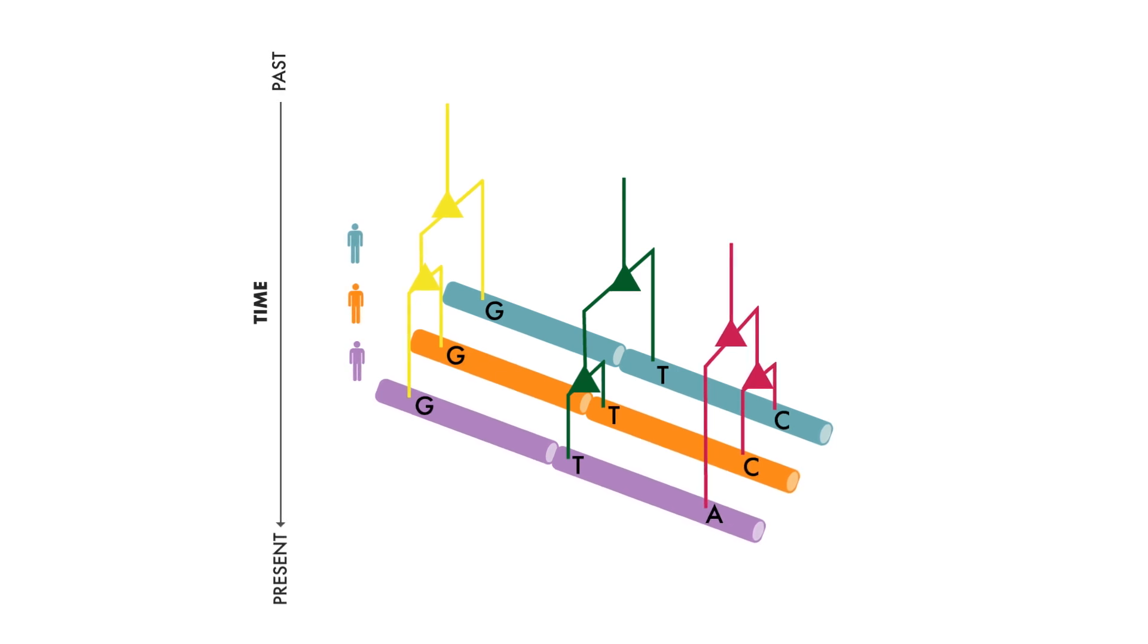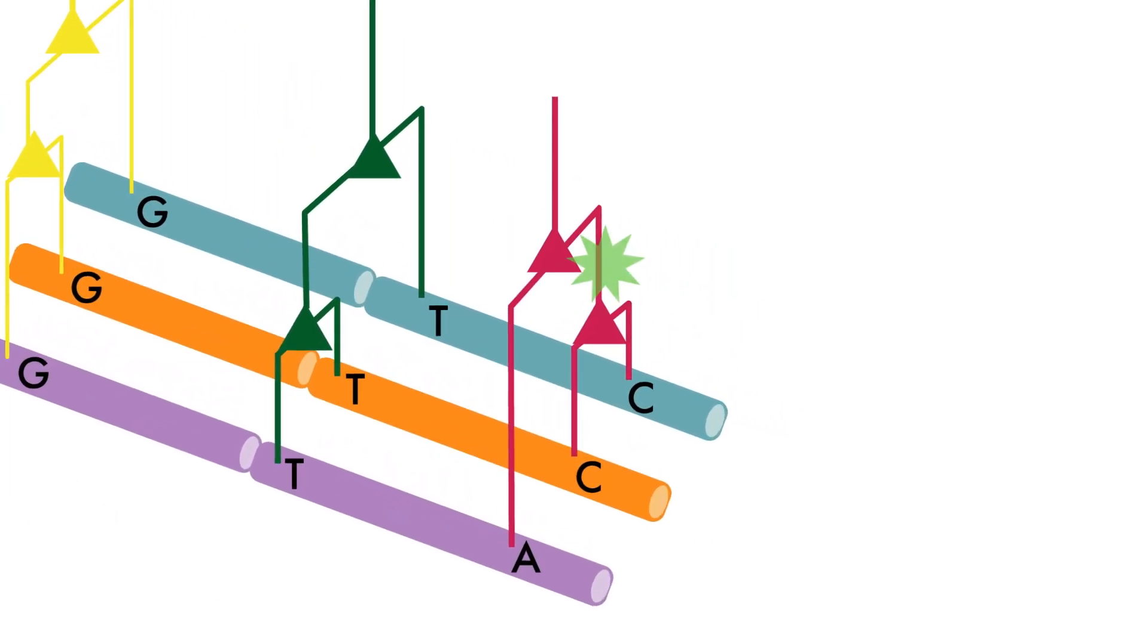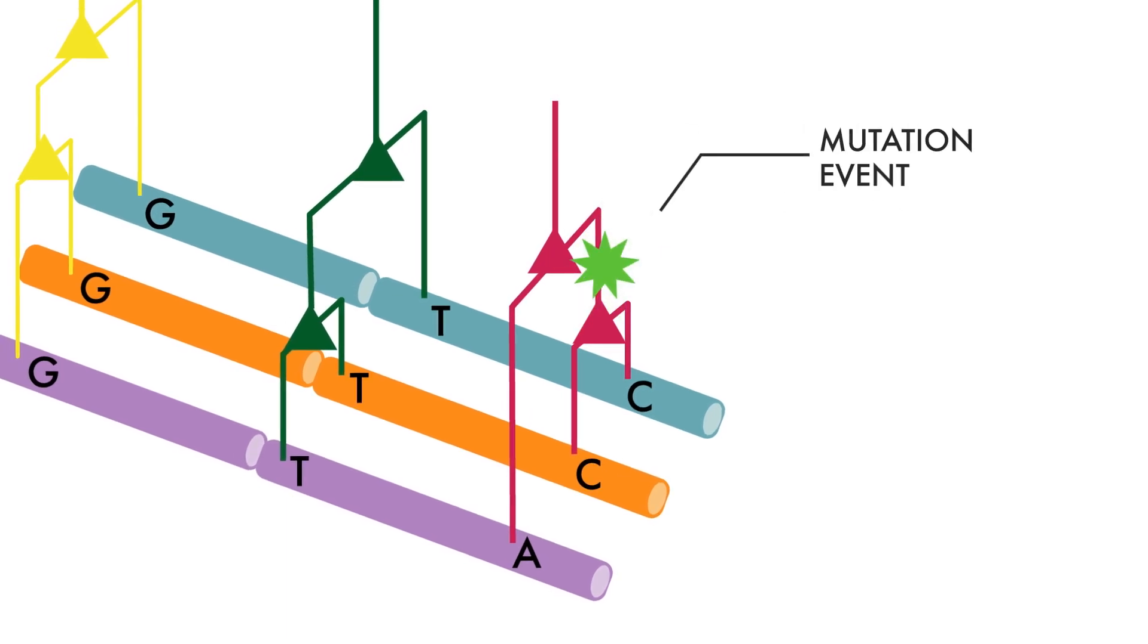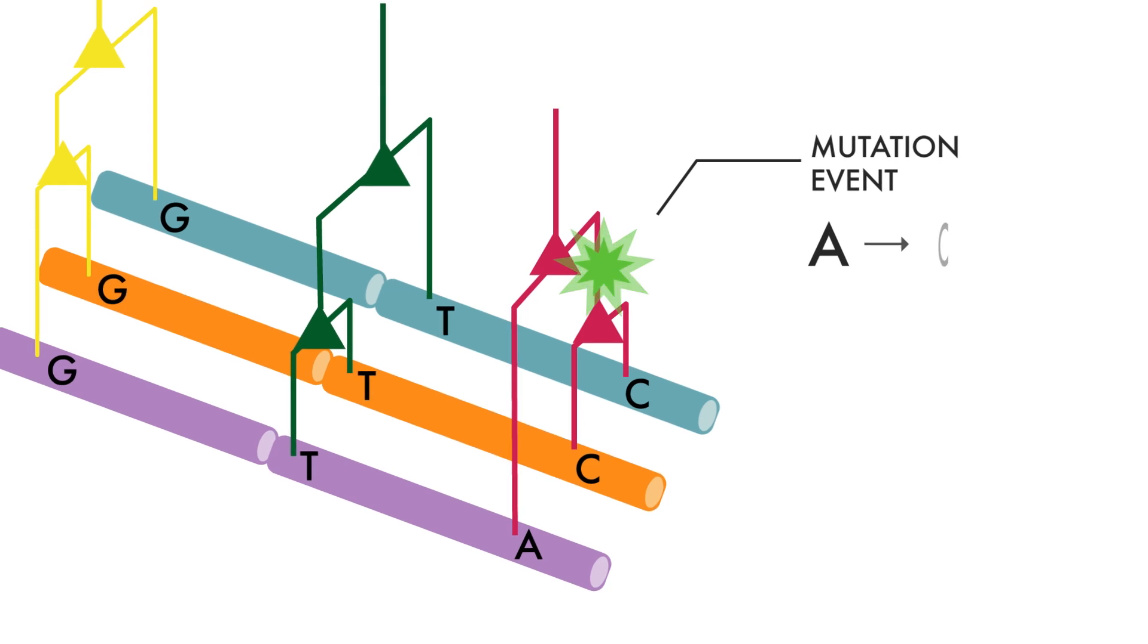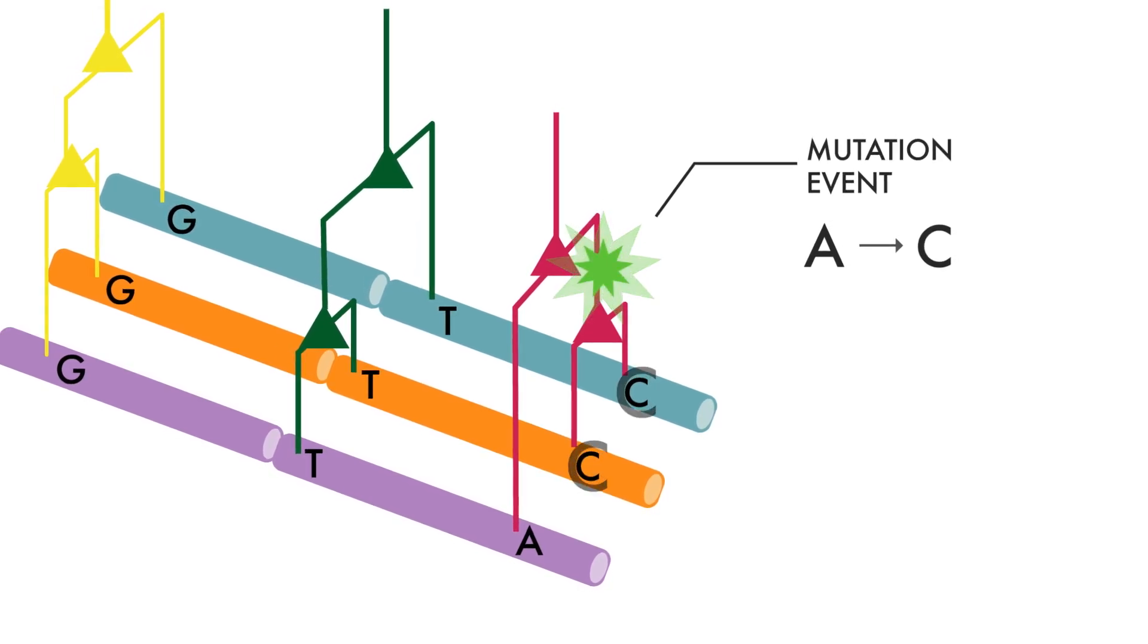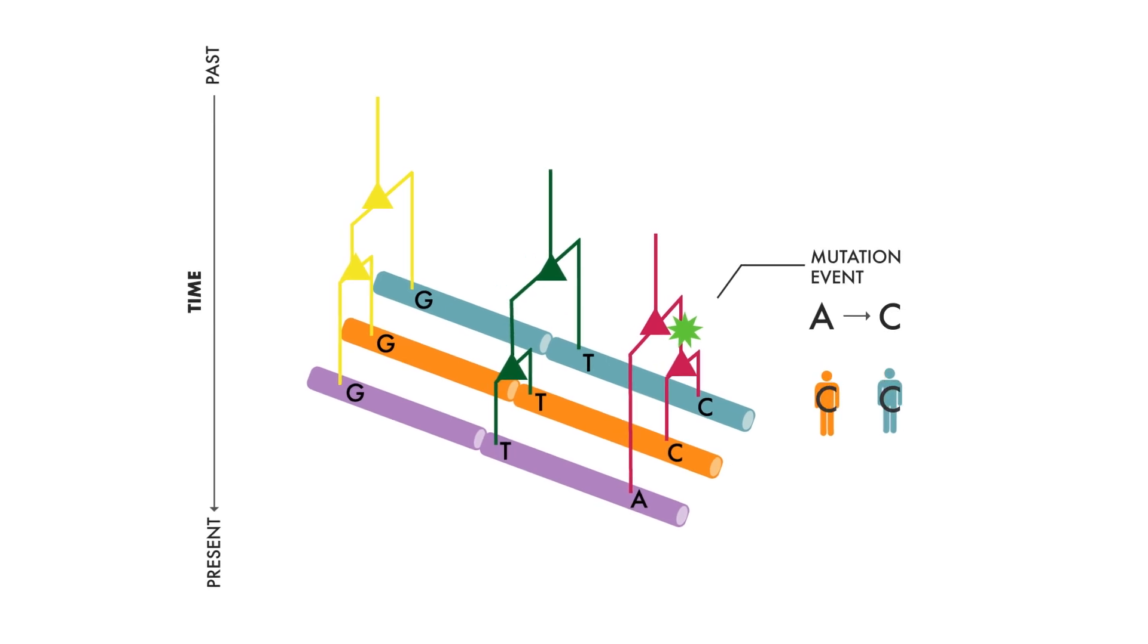The sequences of DNA inform us about who is related to whom. This green star on the pink lineage marks the idea that a mutation event occurred, changing an A to a C in the DNA. So, this lineage is changed to a C, and both the orange and blue individuals inherited this mutation.